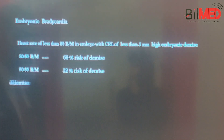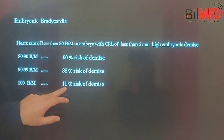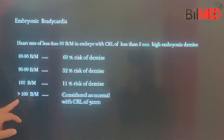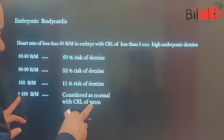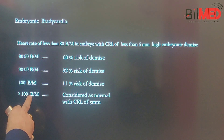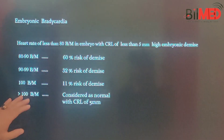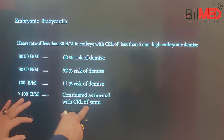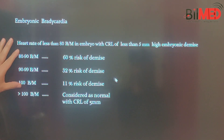A heart rate of 100 beats per minute is associated with an 11% risk of demise. This means that whenever you have a CRL of 5 millimeters, you should have more than 100 beats per minute fetal heart rate. More than 100 bpm with a CRL of 5 millimeters — now concentrate here.